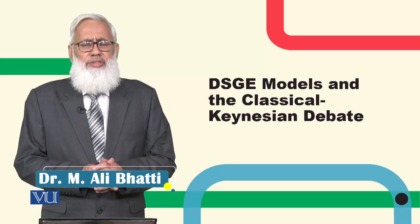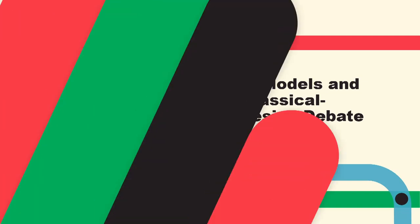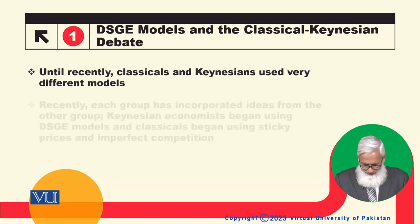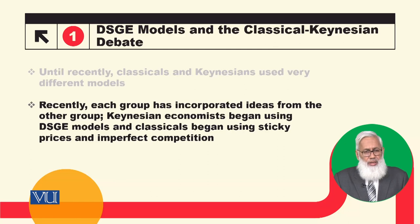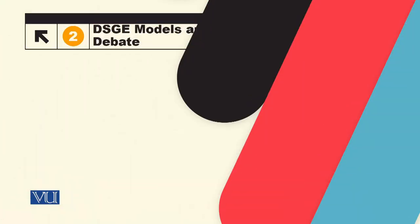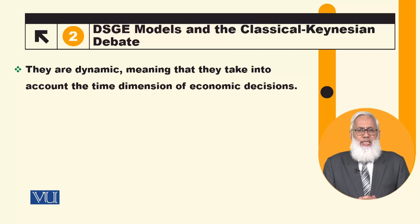Until recently, Classical and Keynesian economists used very different models. Recently, each group has incorporated ideas from the other. Keynesian economists began using DSGE models and the Classical began using sticky prices and imperfect competition. So, DSGE models have become an important tool for discussing the economy.